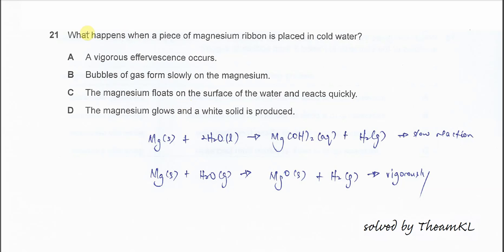Question 21: What happens when a piece of magnesium ribbon is placed in cold water? First we need to know the reactions of magnesium ribbon with cold water and steam. When magnesium reacts with cold water, the reaction is very slow and forms just a few bubbles.